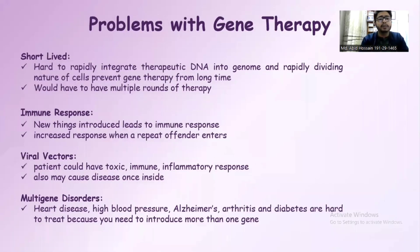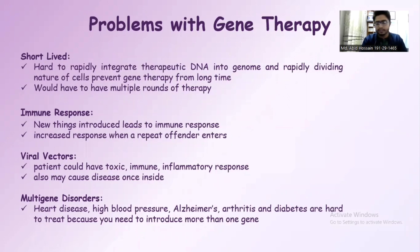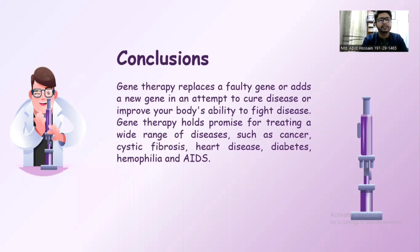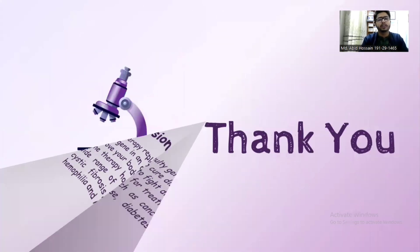There are several problems with gene therapy: it can be short-lived, and an immune response may occur due to the viral vector. Multi-gene disorders like heart disease, high blood pressure, Alzheimer's, arthritis, and diabetes are hard to treat with this type of therapy. Nevertheless, gene therapy replaces faulty genes with new ones and promises treatment for a wide range of diseases such as cancer, cystic fibrosis, diabetes, and AIDS — and is especially important for cancer treatment. That concludes my presentation. Thank you, everyone.